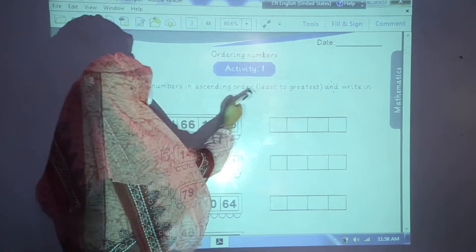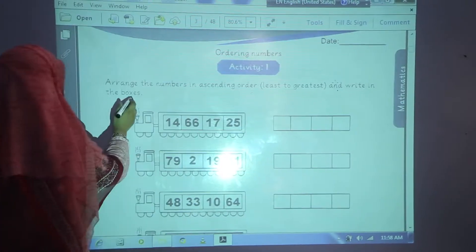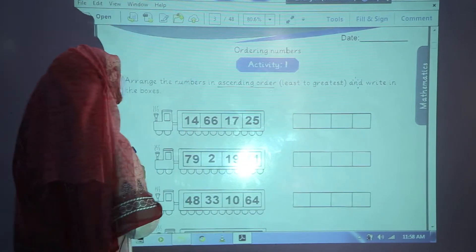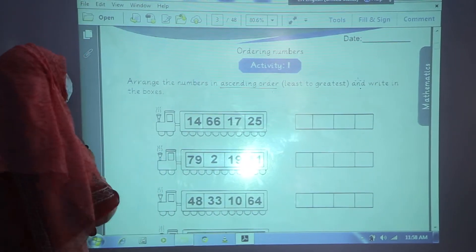Name the numbers in ascending order, least to greatest, and write in the boxes. Ascending order is an increasing order from smaller to greater one.